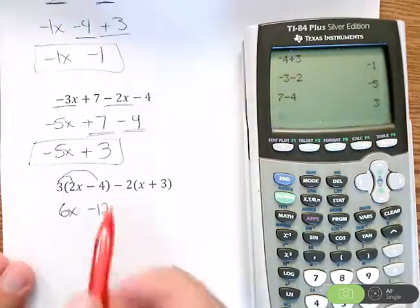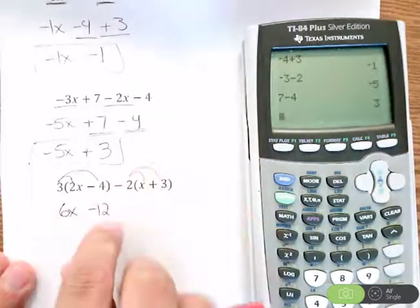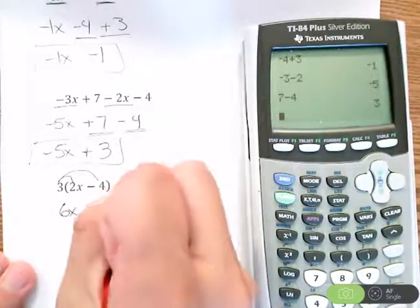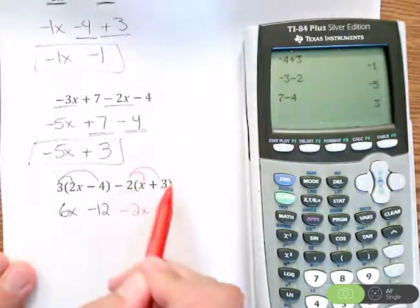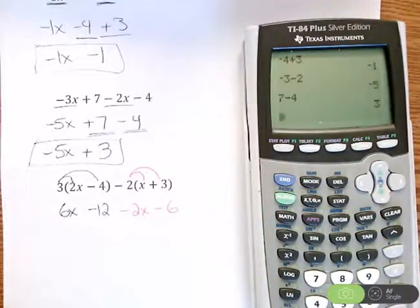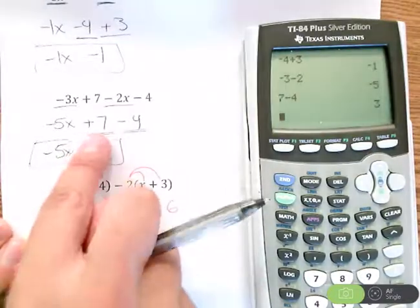Continue on in this process - we see another parentheses down here, so this negative 2, the negative comes with it, the minus comes with it, needs to be distributed through. Negative 2 times x is negative 2x, negative 2 times 3 is negative 6.